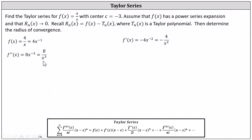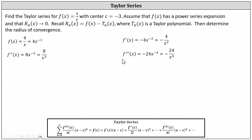The third derivative equals the derivative of eight x to the power of negative three, which is negative 24 times x to the power of negative four, or negative 24 divided by x to the fourth. Now because the Taylor series is centered at negative three, we evaluate all of these functions at x equals negative three.